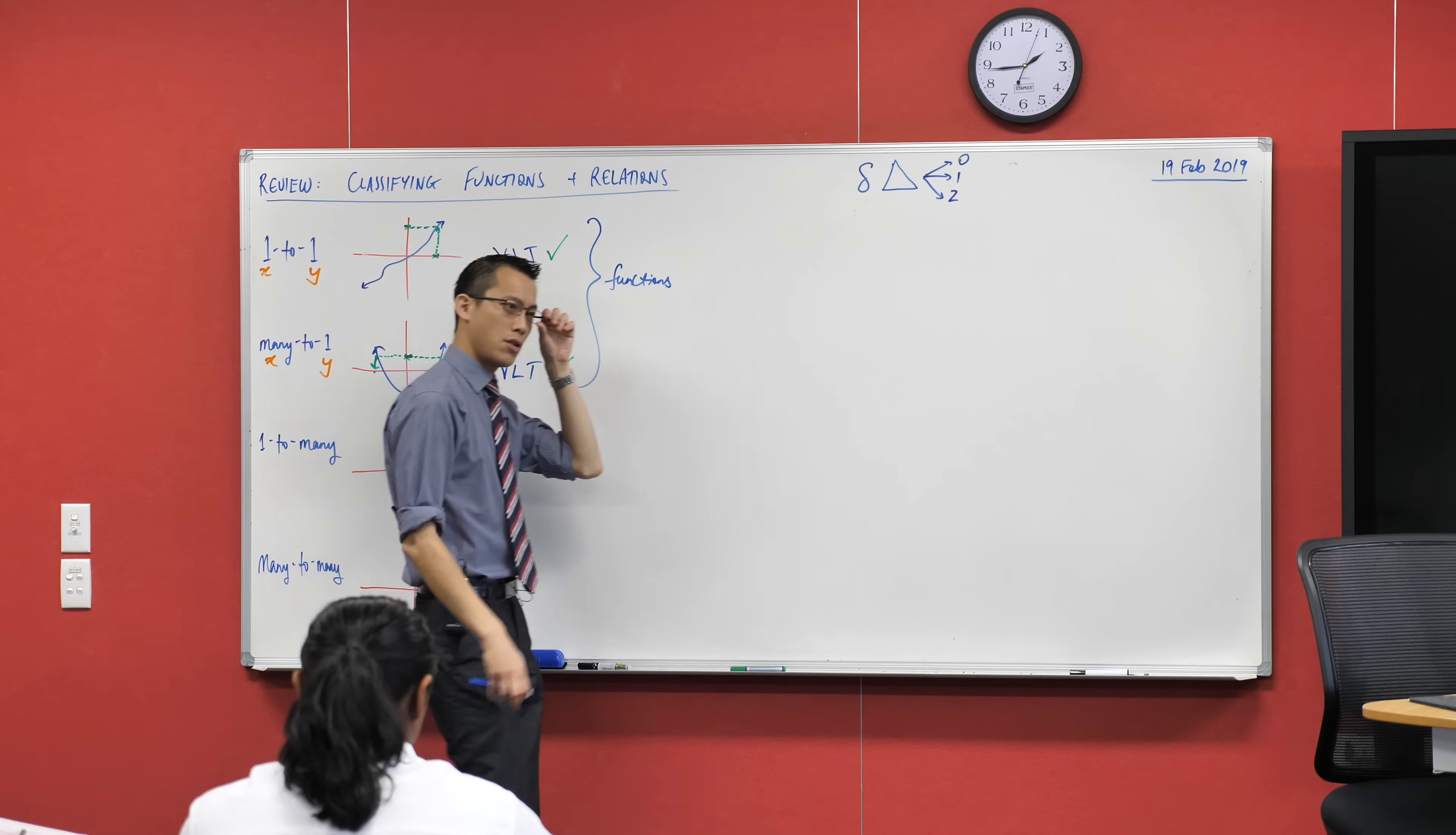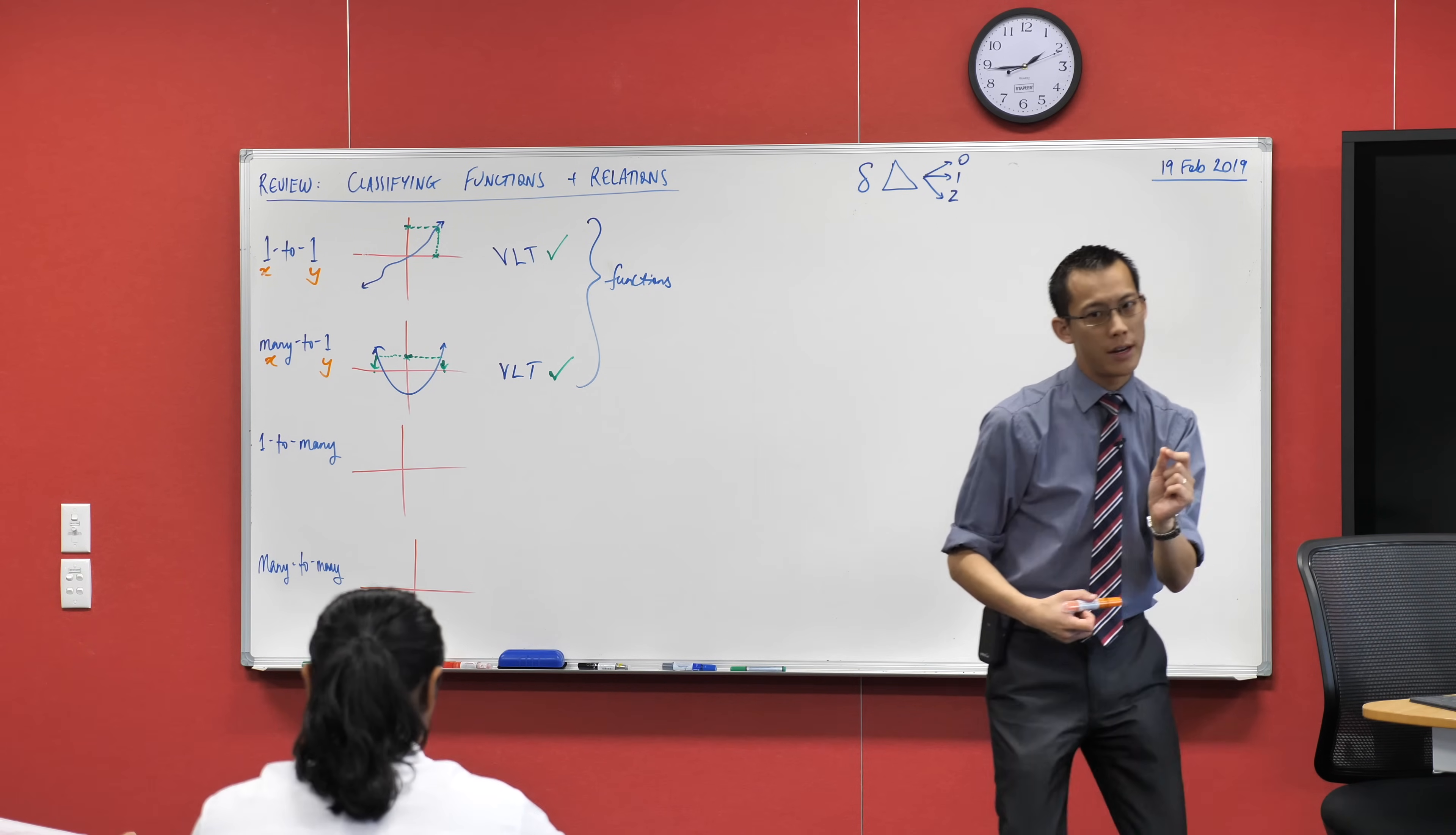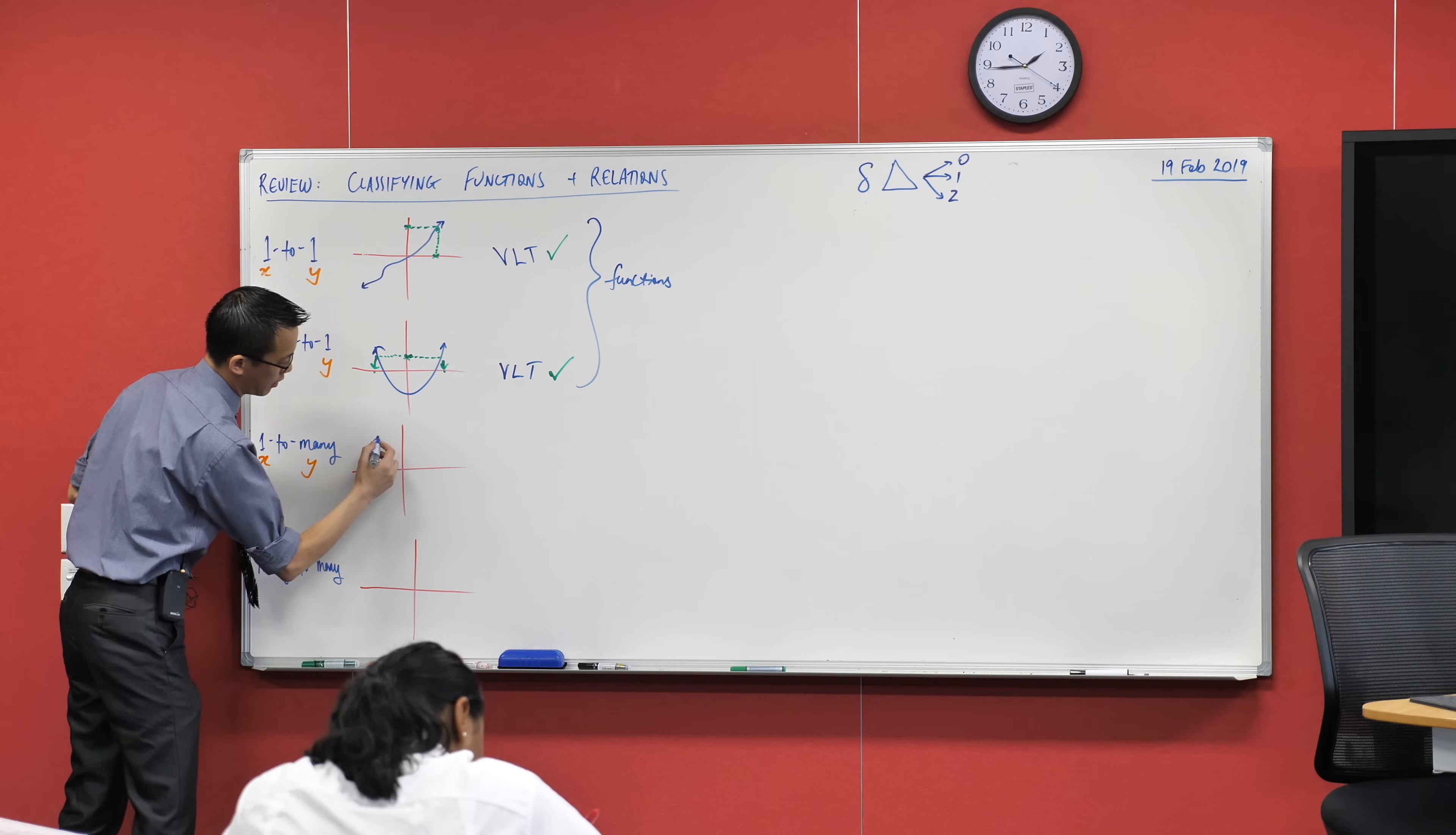Okay, then we start to get to these guys. So one-to-many, I'm going to put it on again. That means a single x value will give you multiple y values when you put it in, right? So for example, if you get one x-to-many-y, you can get anything that looks, for example, like... I'm going to draw a weirdo-looking thing like this.